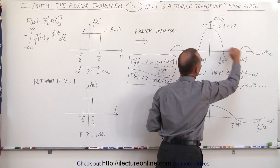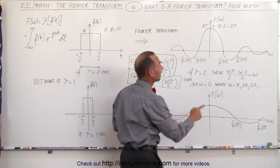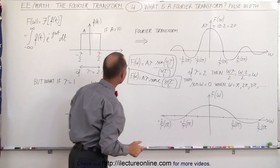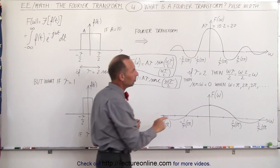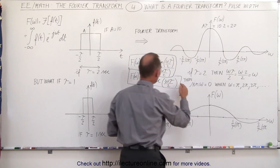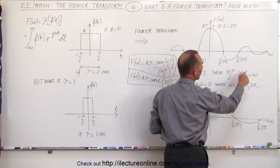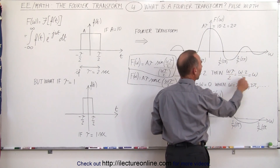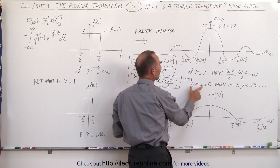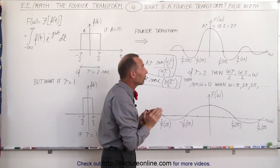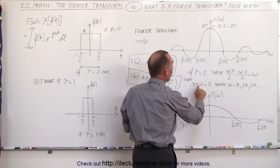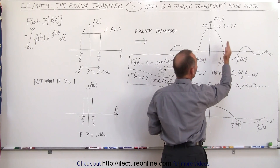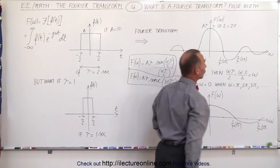Where will the function cross the horizontal axis? We find those values by taking 1/τ times 2π, 2/τ times 2π, and so forth. When tau equals 2 seconds, omega·tau/2 simplifies — the twos cancel — so it becomes just omega. The sine of omega equals zero when omega is π, 2π, 3π, meaning the zero crossings occur at π, 2π, 3π, 4π, and so forth.